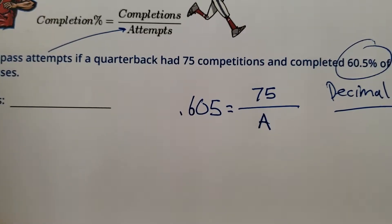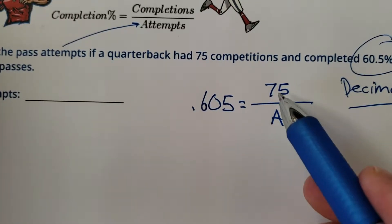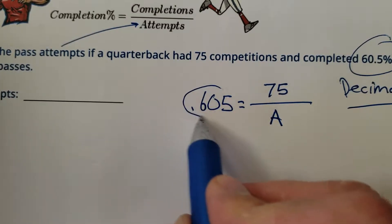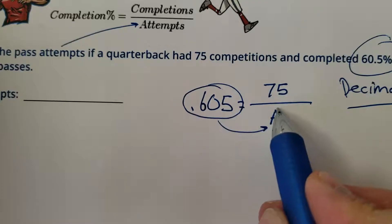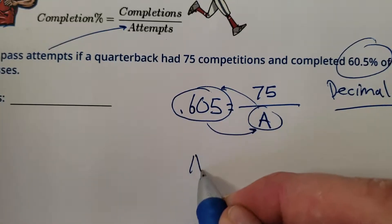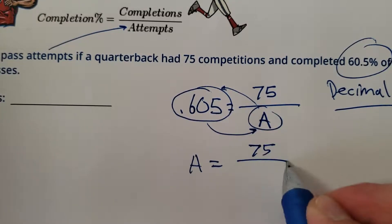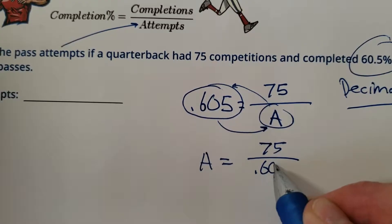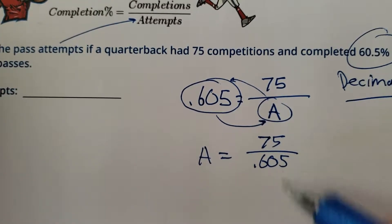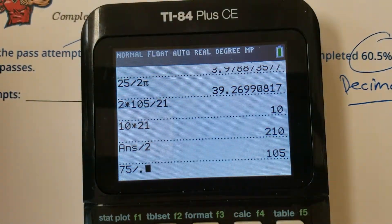Alright, so let's solve for A. Watch this move. Remember when you're dividing by a variable and then you have the actual answer number over here, there's a nice little trick that allows you just to switch them. The number of attempts are going to be the completions divided by that percentage. So you're working backwards. Let's do it really quick. 75 divided by 0.605.